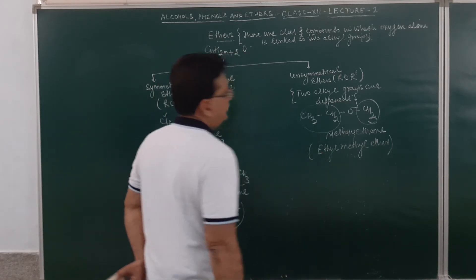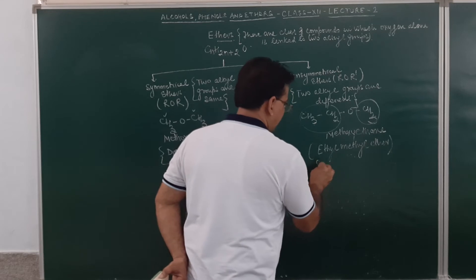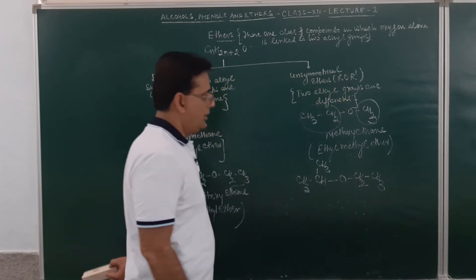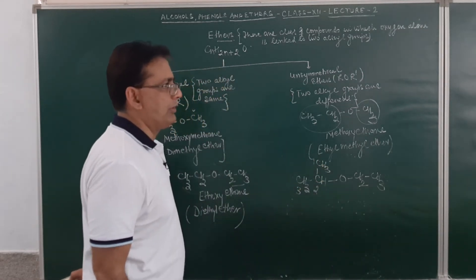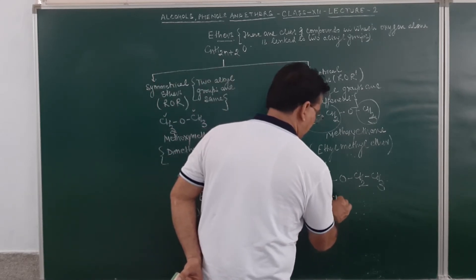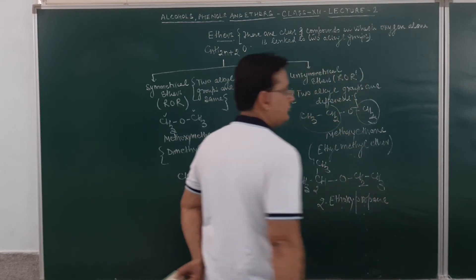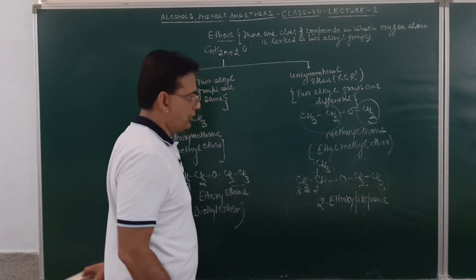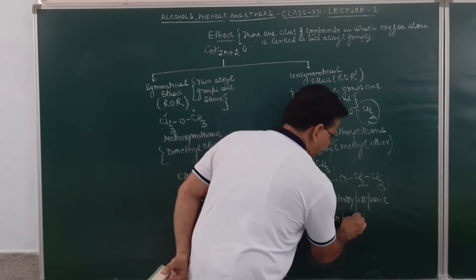Just see this one: if we take CH3-CH(CH3)-O-CH2-CH3, we number the carbons: one, two, three. The name of this compound will be given as 2-ethoxypropane. In the common name system, this is isopropyl and this is ethyl, so the common name is ethyl isopropyl ether.